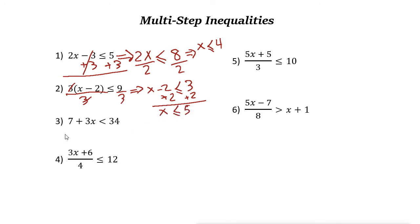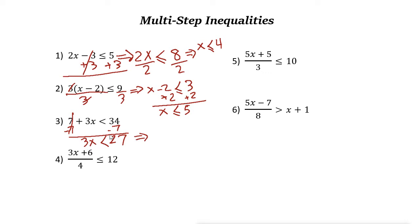Next one: we want to get rid of 7. 7 is just added to 3x, so subtract 7 from both sides — these two cancel out. 3x is less than 34 minus 7, which is 27. Now divide both sides by 3, so 3x divided by 3 is just x, and 27 divided by 3 is 9.